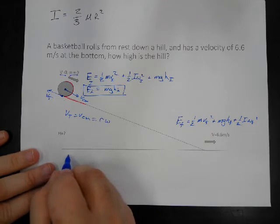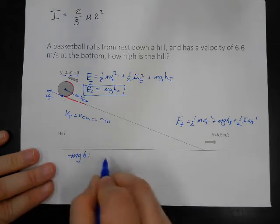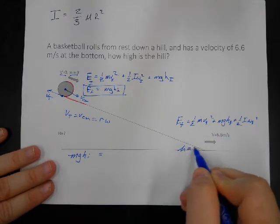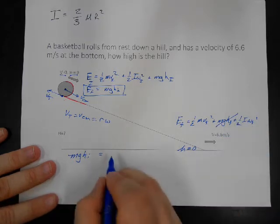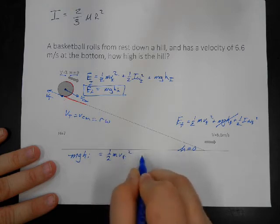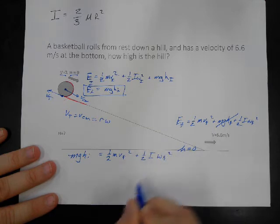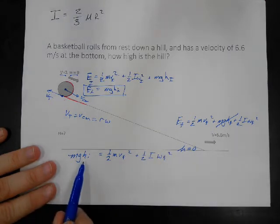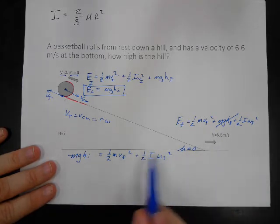And so, we'll have mg h initial equals, well, here we're at the bottom, h is zero down here, so we won't have mg h final. That has to equal one-half mv final squared plus one-half i omega final squared. So, we want to get an expression for h in terms of v final, which is the thing we know, and we want to get rid of all of this stuff.